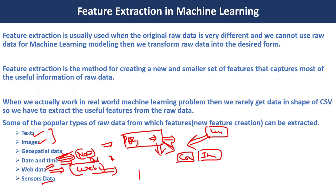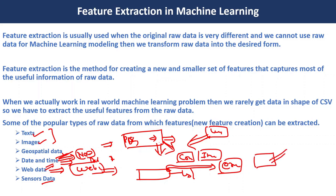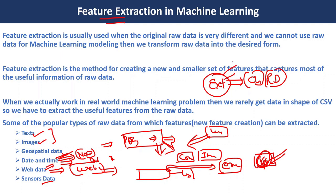Web-related data can be extracted using web scraping to pull useful information from the web. For sensor data — similar to log data — we have to extract some useful information, such as error-related information, using different techniques. This is how we use feature extraction to extract useful information from cleaned raw data, because we cannot use this raw data directly to train our model.